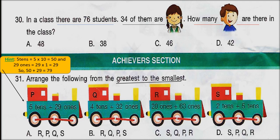Next question: arrange the following from the greatest to the smallest. Options P, Q, R, S are given in the form of tens and ones. Calculate the number for each option first — a hint is given for how option P is calculated. Then calculate Q, R, S in the same way and arrange them in greatest to smallest order. Check answers at the end of the video.